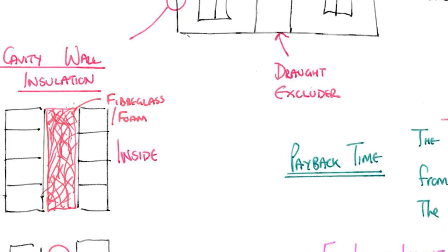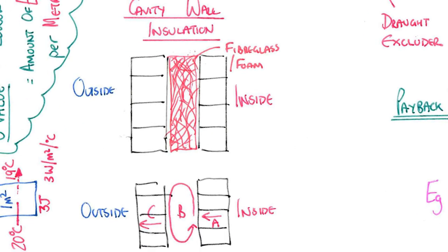Cavity wall insulation works in a different way. This time the inside is on the right, outside is on the left. The heat inside will conduct through the wall, and when it gets through the first wall there's a gap between the inner wall and outer wall. The reason there's a gap is basically if it rains on the outside wall, it won't soak through to the inside wall.